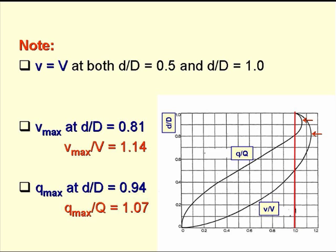There are three important points that this chart tells us. Firstly, little v equals big V at two values of d/D: when it equals 0.5 and when it equals 1. Secondly, there is a maximum velocity of flow, and this occurs at a d/D value of 0.81, and it's 14% more than the velocity of flow at full pipe. Thirdly, there's also a maximum flow, and this occurs at a d/D value of 0.94, and this is 7% greater than the flow at full pipe.